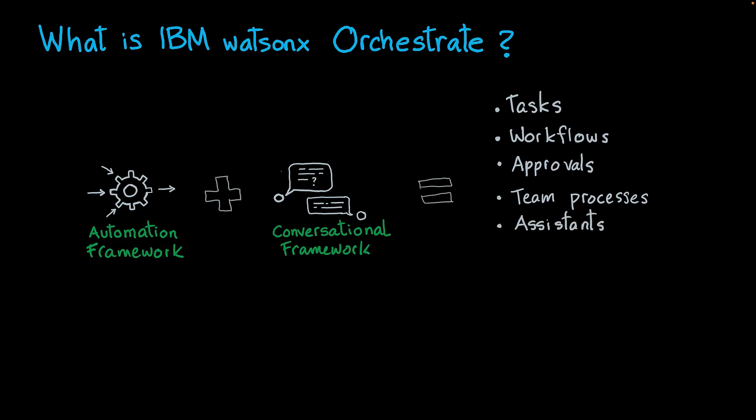You can create assistants, which can be seen as an entity that is an expert in a particular domain, and they can help you or answer questions about that domain. You can also create retrieval augmented generation applications, configuring Watson Orchestrate to use the power of an LLM to answer a particular set of questions. Finally, you can create agents, which can be seen as the evolution of digital assistants. An agent allows you to reroute conversations and interact with multiple assistants.